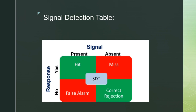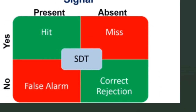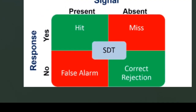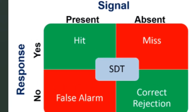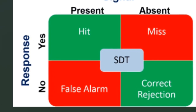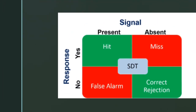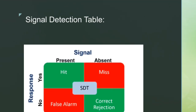You can see in the signal detection table: green tables are those people who are telling the truth, and the red table indicates not telling the truth. For example, if the stimulus is present and the observer response is yes, it will be a hit. In false alarm, the answer is yes but the person is not telling the truth. I will help you with an example to make it more clear.